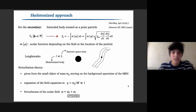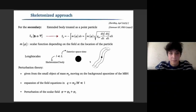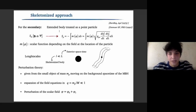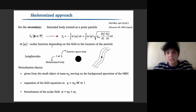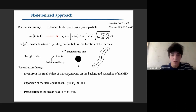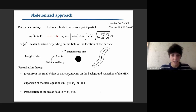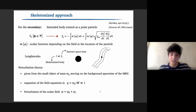The secondary object is treated as a point particle using the skeletonized approach, so the matter action is replaced by the action of a point particle given by an integral over a function M(φ), a scalar function depending on the field at the location of the particle. We then study the binary system in perturbation theory, where the perturbations are given by the small object moving in the background spacetime of the central black hole, expanding the field equations in the mass ratio.